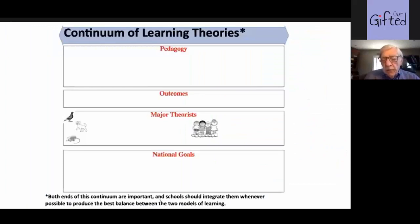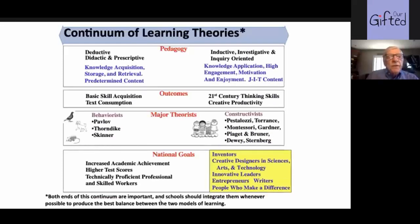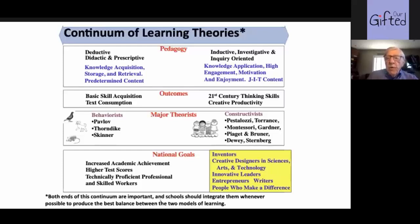This is a diagram that I begin almost all presentations with. As we all know, but sometimes don't think a lot about, all learning exists on a continuum that ranges from deductive, didactic, and prescriptive learning on the left to inductive, investigative, and inquiry learning on the right. In the lower part of that box, you see JIT, which stands for just-in-time content — content that may not be in lesson plans or unit plans or even the textbook, but it's information that children learn how to go and get when they need it to deal with a particular problem.